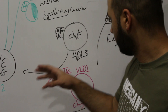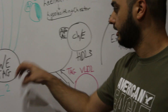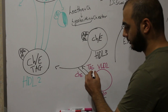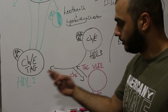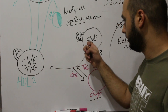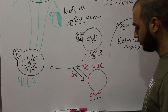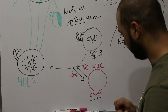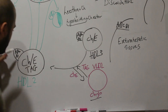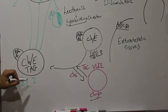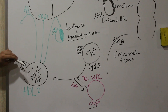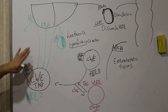The result of this exchange is HDL2. HDL2 is the same as HDL3 but with an additional amount of triacylglycerides and less cholesterol than HDL3. After that, what is the fate of HDL2? HDL2 may go under three pathways.